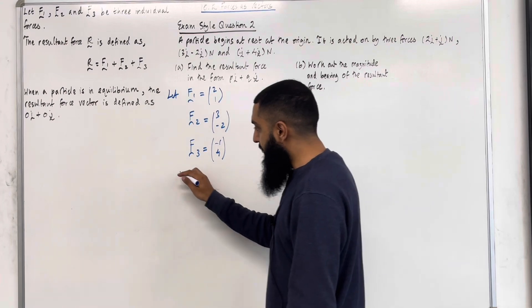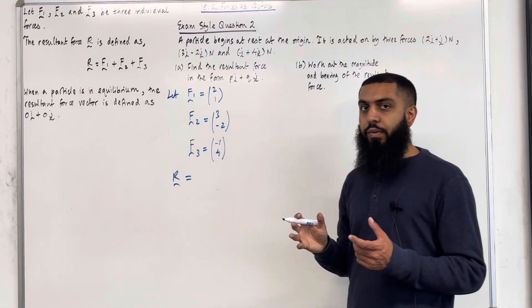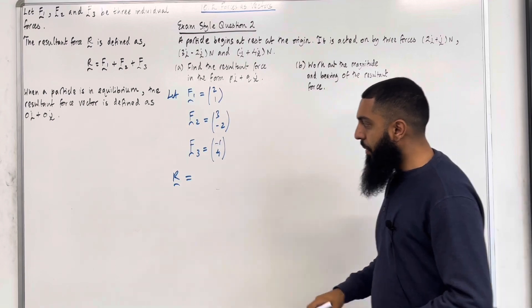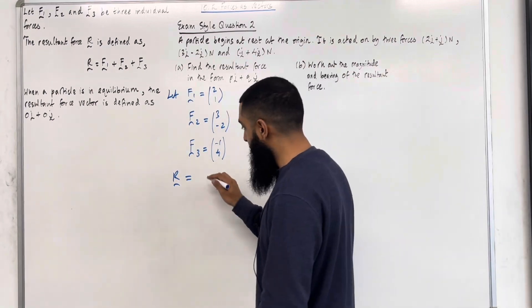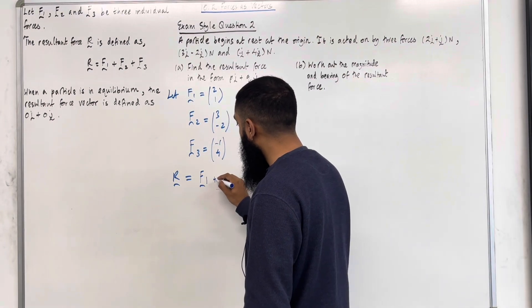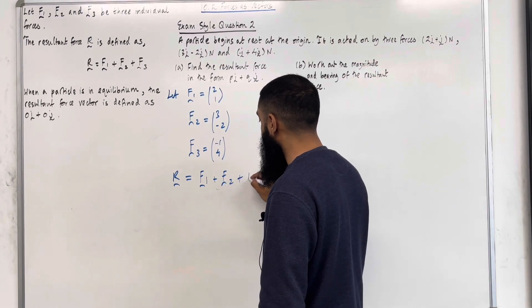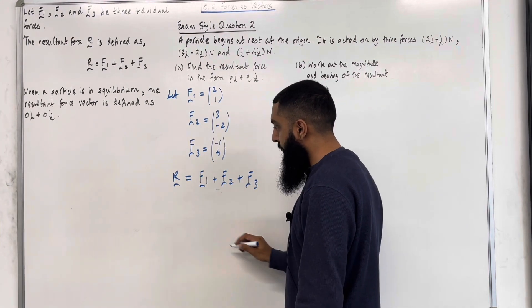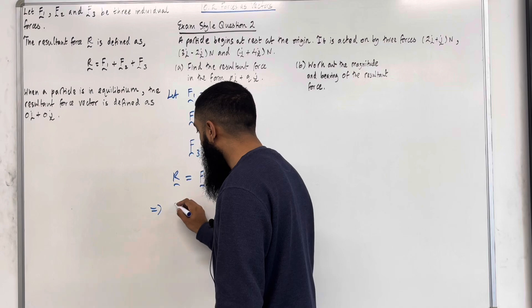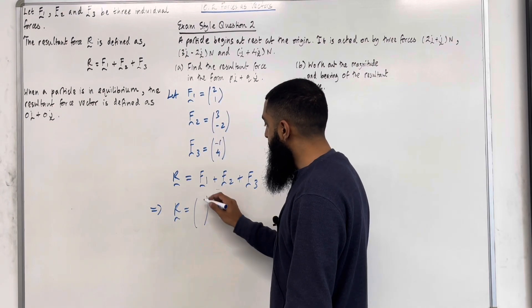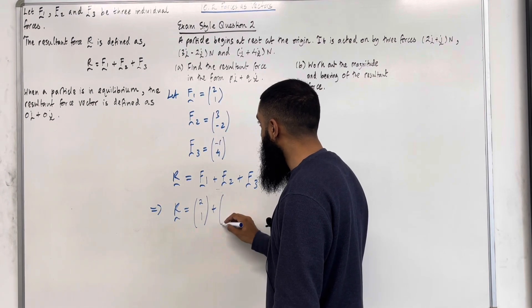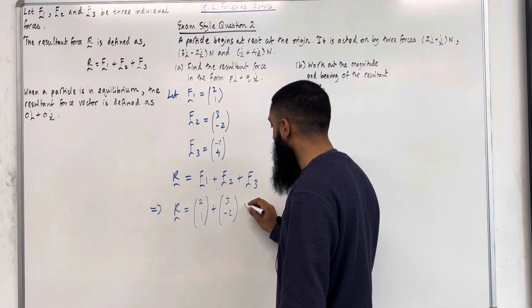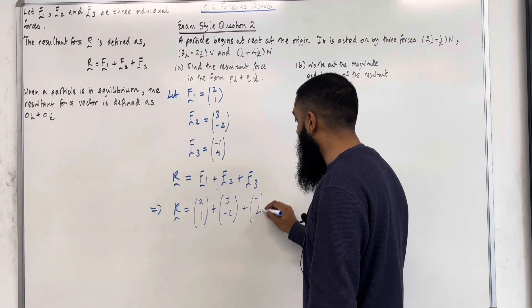The resultant force R is defined as the sum of the individual forces. So, in this scenario, it is the sum of three forces, F1 plus F2 plus F3. This implies that R is equal to 2 and 1 plus 3 and minus 2 plus minus 1 and 4.